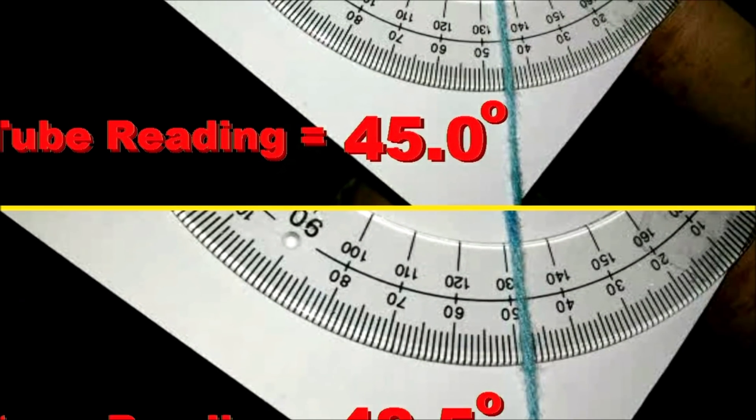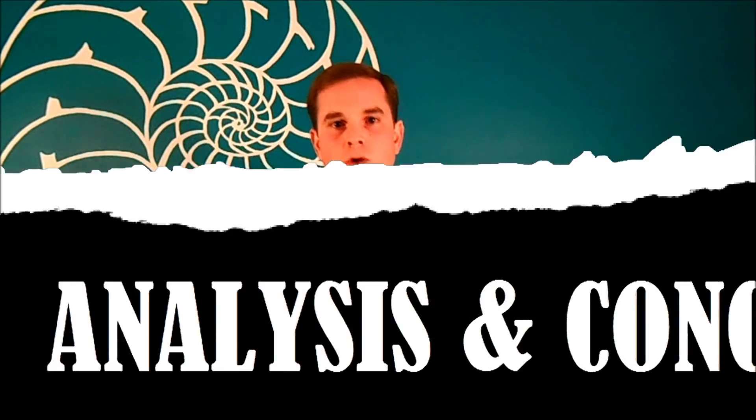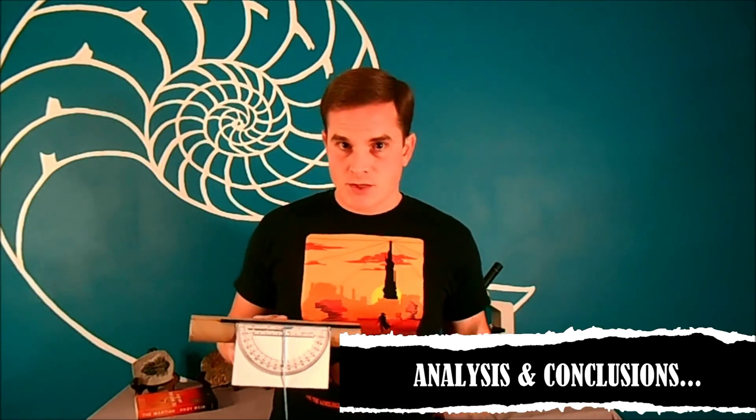So here's our two measurements: 45.0 degrees for the tube, 48.5 degrees for the straw. Okay, so we got our measurements. How'd you do? Did you get the same thing I got? Actually, unless you're coincidentally at the same latitude as me, I don't think you should have gotten what I got.